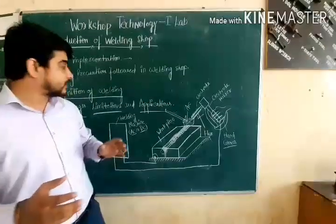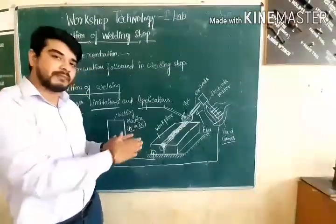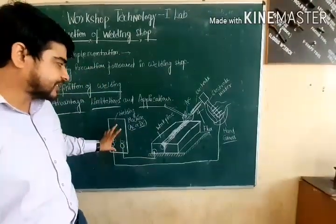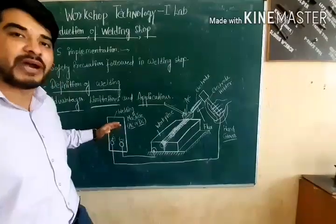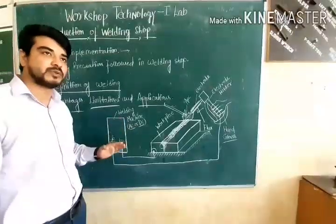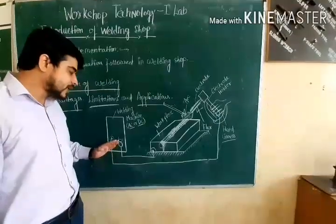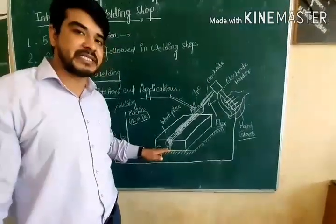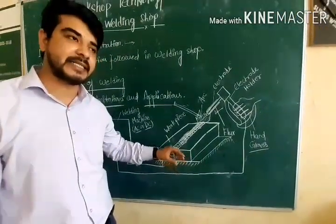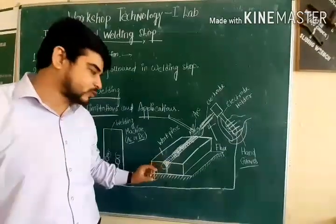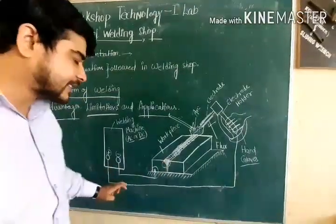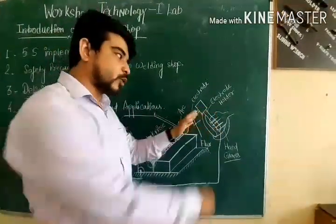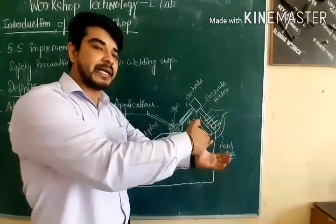Here you can see the figure of electric arc welding — what are the components and what is the process of welding. This is the welding machine, AC and DC. Here we are using the welding machine with two terminals: one negative terminal and one positive terminal. The polarity depends on what type of welding we are doing. One terminal is connected to our work piece, which is connected to our table via an earth clamp. The other terminal is connected to our electrode holder.